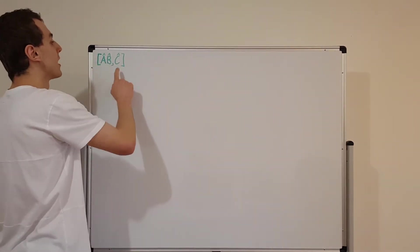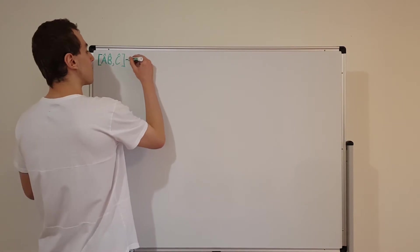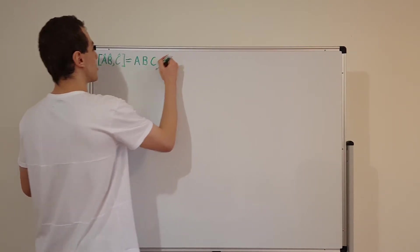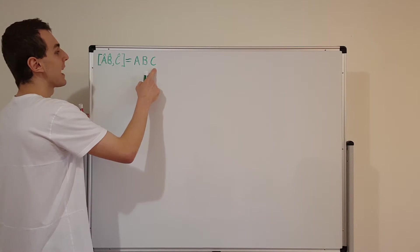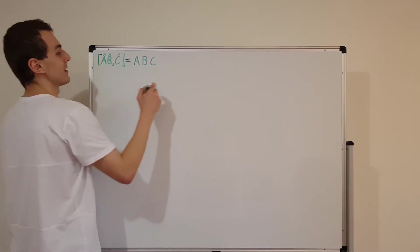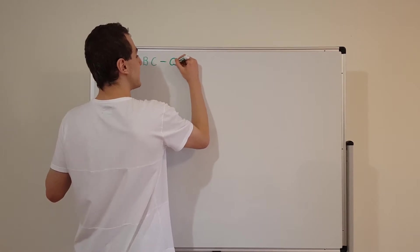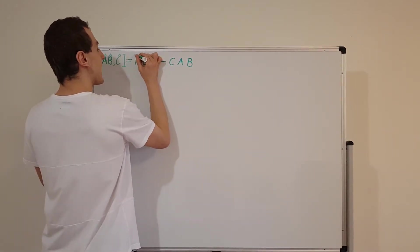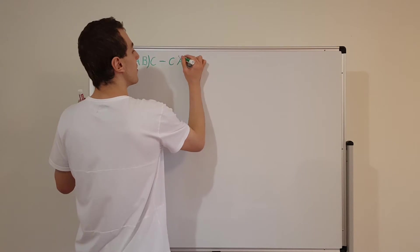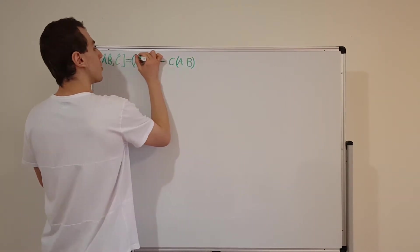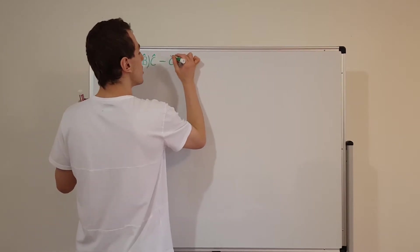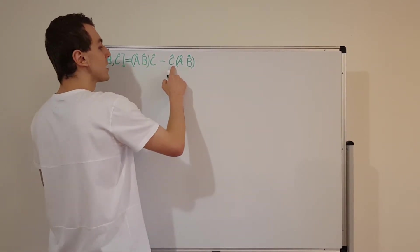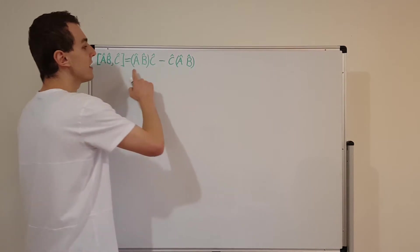I'm going to write this out using the definition of a commutator. So first we're going to have a·b and then c, and then we're going to subtract off c·a·b. We can group the a·b together in each term. This is the definition of the commutator of the product (ab) with c.